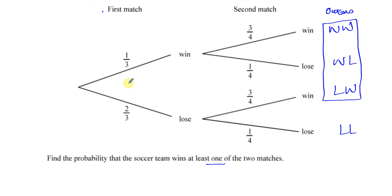Now to find the probability of each individual outcome, you multiply along the branches. So one third times three quarters will give me this outcome. And one third times one quarter will give me this outcome. And two thirds times three quarters will give me this outcome.